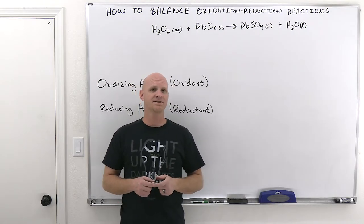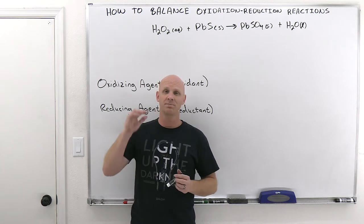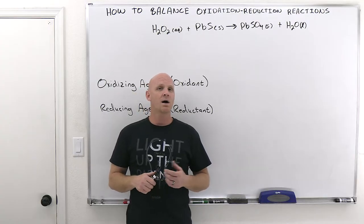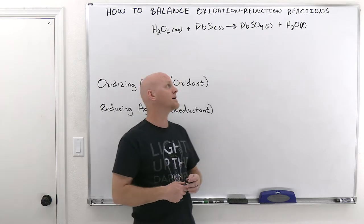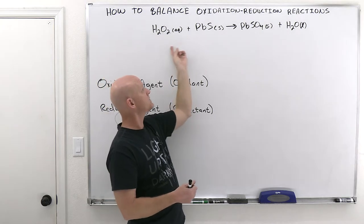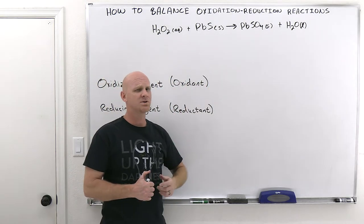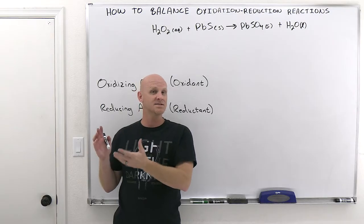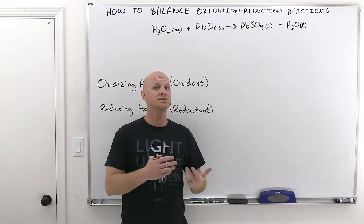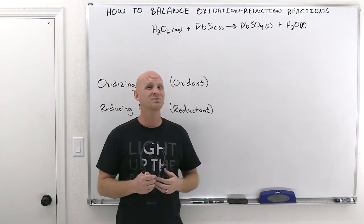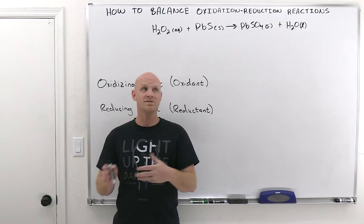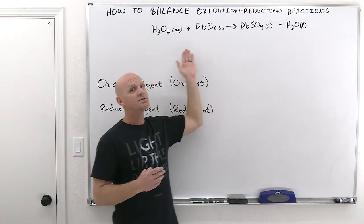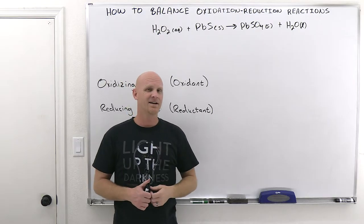Balancing redox reactions is a little bit of a pain — there's a process to it that you've got to memorize so you can reproduce it on an exam. There are a couple of different methods, and we're going to go through the most commonly taught one: the half-reaction method. The thing that makes this tricky is you've got to balance out the electrons. With a redox reaction, electrons are lost by one species — the species being oxidized — and gained by another, the species being reduced. It's an electron transfer reaction, and you've got to balance out the electrons you can't see, in addition to all the elements you can.